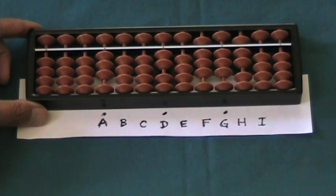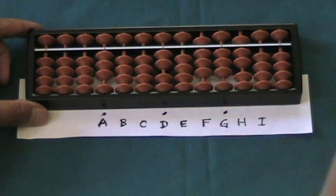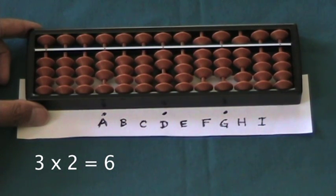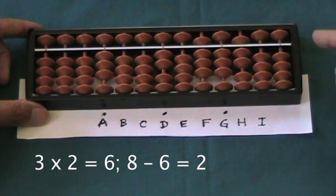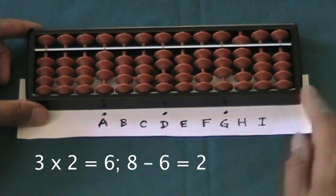In the next step, we have the quotient 2 on rod D, the second rod to the left of 8 in 837. If we multiply the divisor 3 by the quotient figure 2, this subproduct is 6. We subtract the 6 from the 8 on rod F, and that leaves 2 on rod F. That is the remainder after dividing the 8 by the 3. We get the quotient of 2 and the remainder of 2.